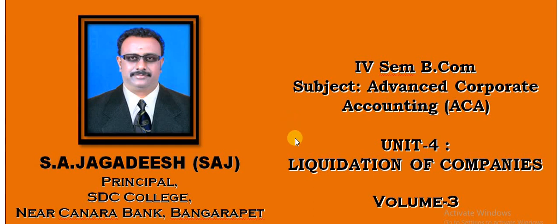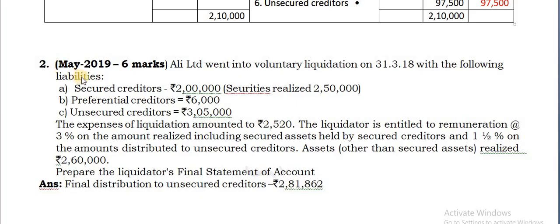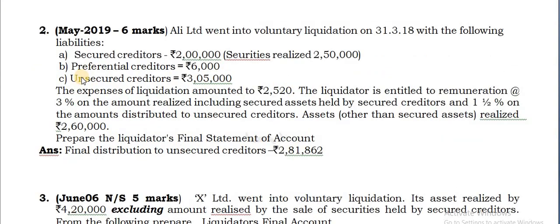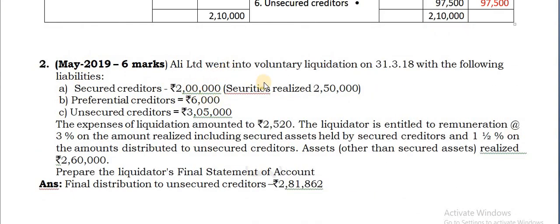Here we go with the third volume of the chapter liquidation of companies. Ali Limited went into voluntary liquidation on 31/3/18 with the following liabilities.